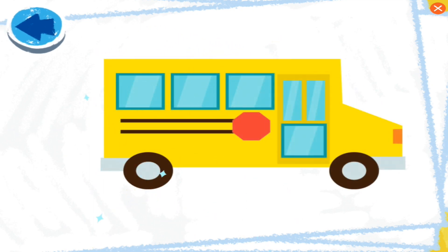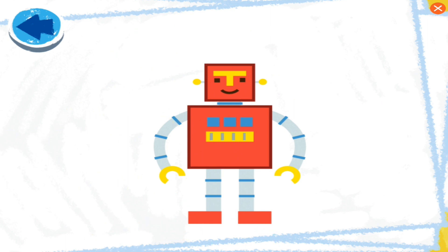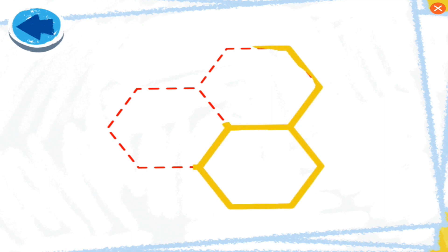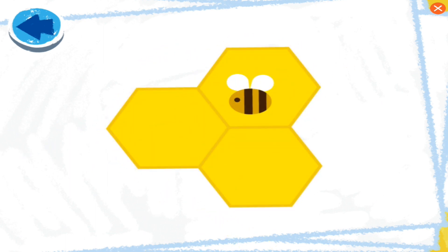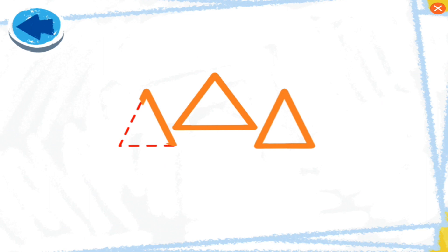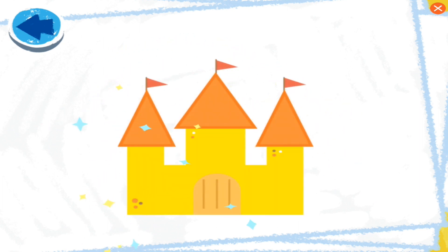This picture has squares! Boy, Elmo wonders what it is. This picture has squares! Boy, Elmo wonders. Oh boy, it's a robot! This picture has hexagons! Boy, Elmo wonders what it is. Elmo loves making art. Oh boy, it's a honeycomb! This picture has triangles! Boy, Elmo wonders what it is. Elmo loves making sandcastles.